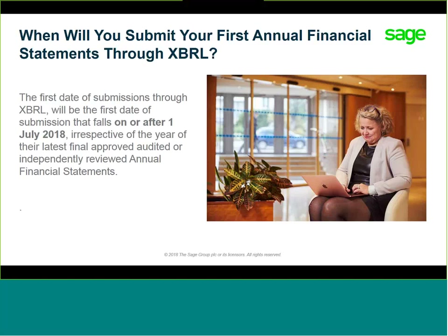XBRL has been rolled out since the 1st of July 2018. Should the anniversary date of incorporation of the entity be coming up, please note that you have 30 days thereafter to submit the annual return with the latest available audited annual financial statements, irrespective of the year it applies to. For CCs, the allowance is 60 days after the date of incorporation.